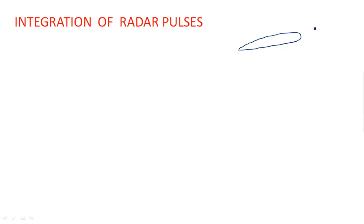When we are transmitting a main lobe, targets may be located at different places. Consider three different targets A, B, and C. The same lobe may touch target A at a particular point, at maximum peak it may touch target B, and somewhere around here target C will be touched. When we receive the signals back towards the radar system, we get the received echo pulses because of targets A, B, and C.